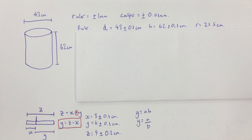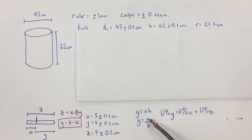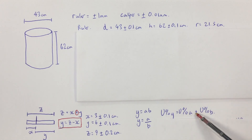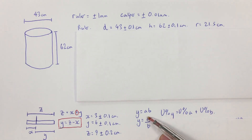It's more complicated when equations involve multiplication or division, because we need to calculate the percentage uncertainty. For Y equals A times B, or A divided by B, the percentage uncertainty in Y is calculated by taking the absolute uncertainty divided by the value times 100, then adding the percentage uncertainties of A and B together.